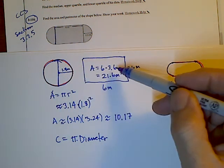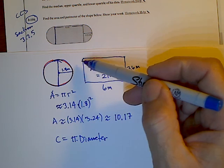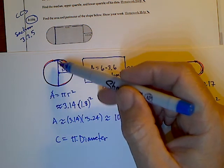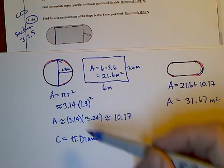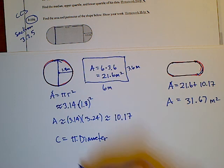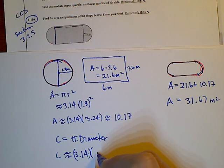And the diameter, we know that it's that 3.6, it's that whole length right here, 3.6. So I'm going to say the circumference is approximately, I'm going to use pi being approximately 3.14, and I'm going to multiply that times the diameter, which is three and six tenths.